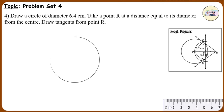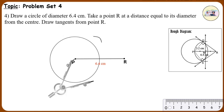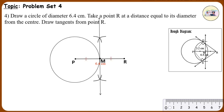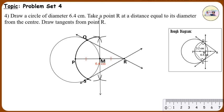Steps of Construction: Construct a circle of radius 3.2 cm with center P. Take a point R in the exterior of the circle such that the length of PR is equal to 6.4 cm. Draw segment PR using a ruler. Draw the perpendicular bisector of segment PR to get its midpoint M. Draw an arc with radius PM and center M. Name the points of intersection of the two circles as Q and S. Draw line RQ and line RS. Lines RQ and RS are the required tangents. Note: Since the length of PR is exactly double the length of PM, the perpendicular bisector passes through the point on the circle.